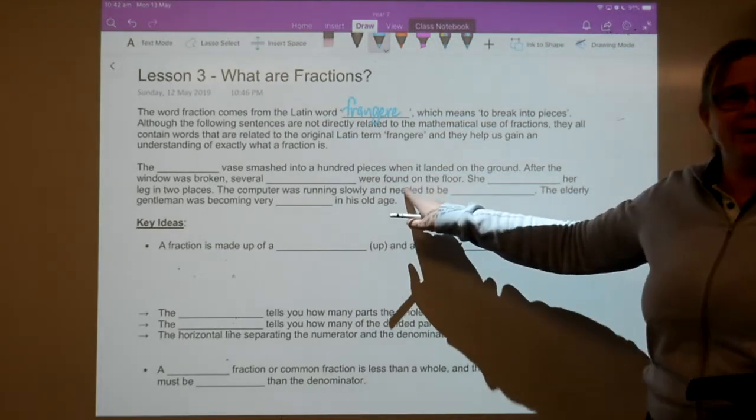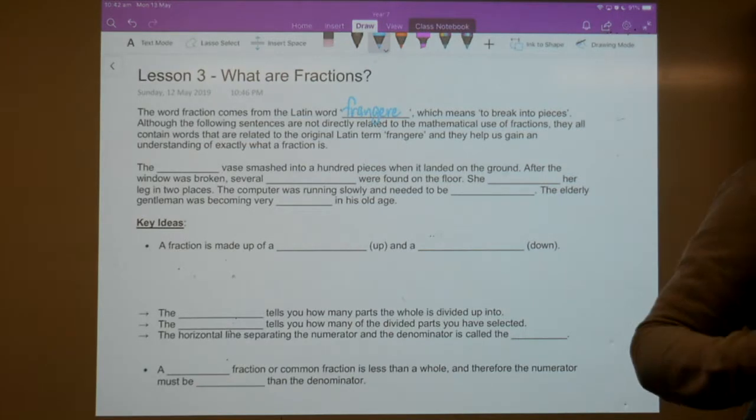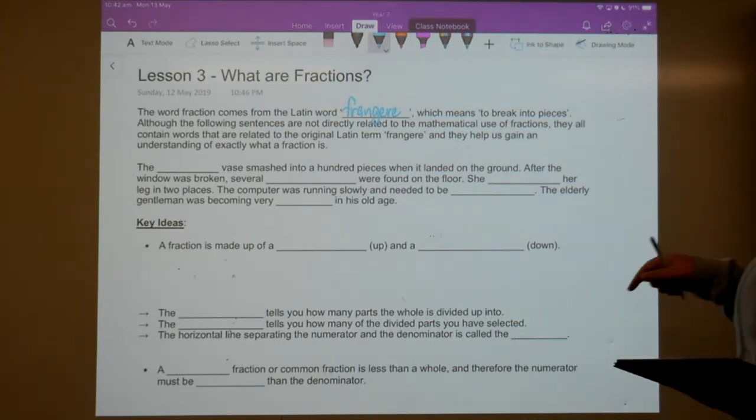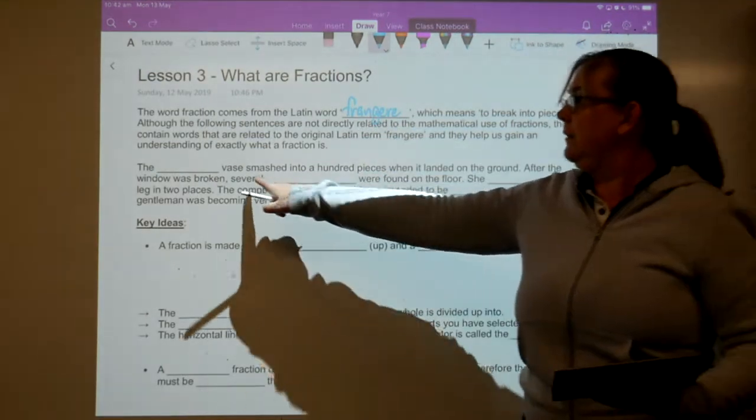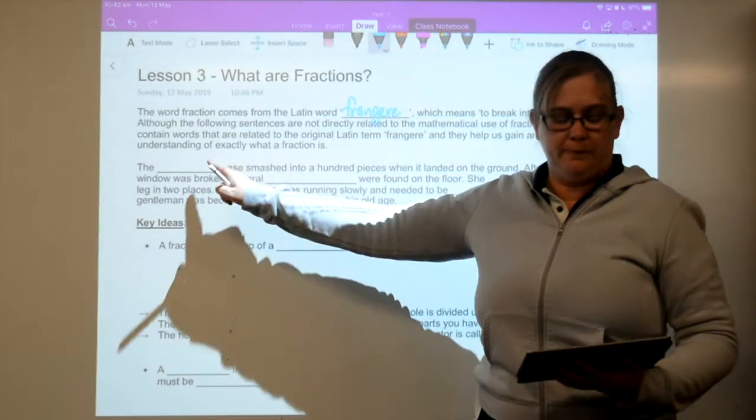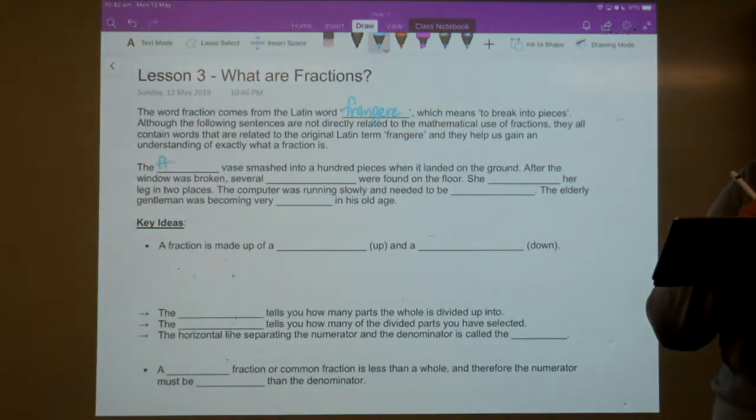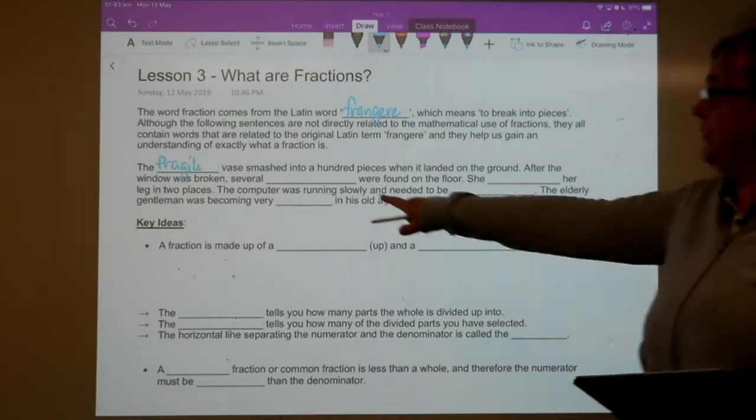Now, I've got a whole bunch of sentences here, a whole bunch of sentences that use words that come from that word frangie, that are all linked a little bit. Now they might not be necessarily math linked, but they all come from this one word. Okay, so, the first word, the first word is fragile. Fragile base smashed into a hundred pieces when it landed in town.